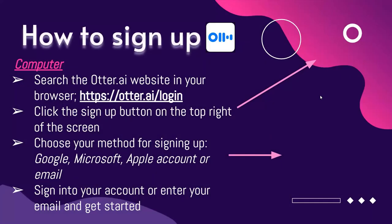The link is provided when you get your copy of the slideshow, which is just otter.ai. You can click the button on the top right of the screen when you open the page to make an account, use one of the email addresses like we talked about before, and sign into your account and just get started.